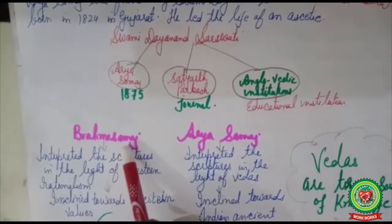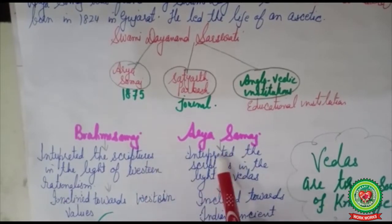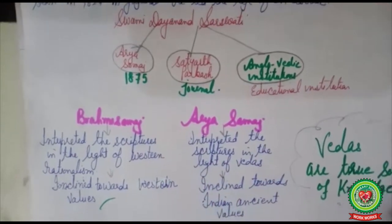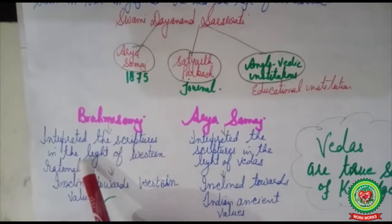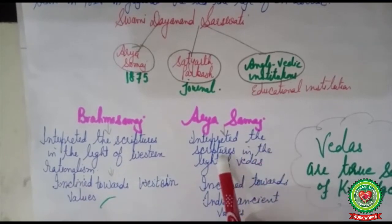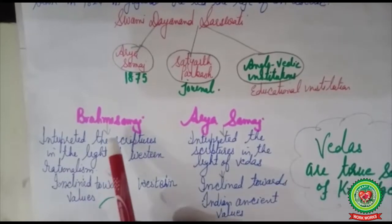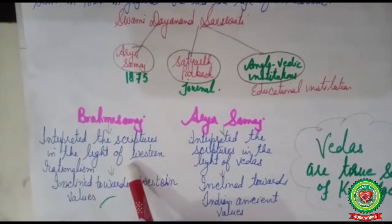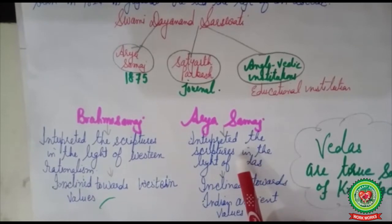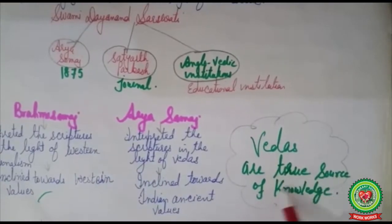There were basically two differences between Brahmo Samaj and Arya Samaj. The Brahmo Samaj interpreted the scriptures in the light of Western secular rational and logical ideology, whereas Arya Samaj cherished ancient ideals and was inclined towards Indian ancient values. Arya Samaj also believed that the Vedas are the true source of knowledge.